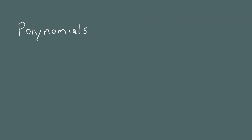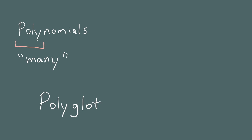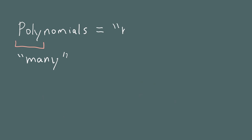Today we're going to talk about polynomials, and we're going to begin by looking at the word itself. The prefix 'poly' means many, just like a polygon is a shape with many sides and a polyglot is someone who speaks many languages. So the word 'polynomials' means 'many-nomials.'